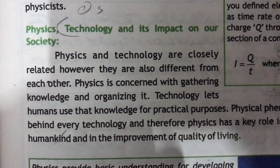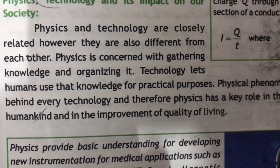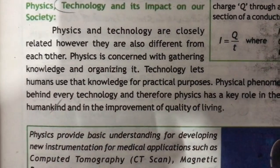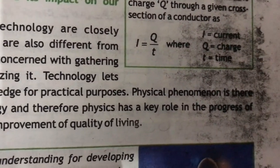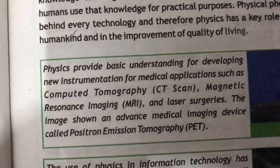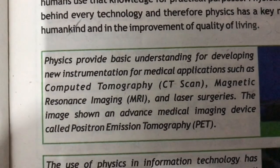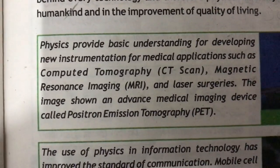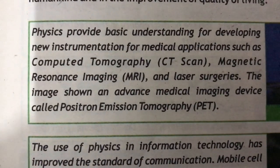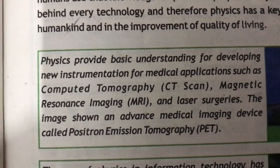Physics, technology, and its impact on society — physics and technology are closely related, however they are also different from each other. Physics is concerned with gathering knowledge and organizing it; technology lets humans use that knowledge for practical purposes. Physical phenomena are behind every technology, and therefore physics has a key role in the progress of humankind and the improvement of quality of living. Physics provides basic understanding for developing new instrumentation for medical applications such as computed tomography (CT scan), magnetic resonance imaging (MRI), and laser surgeries. The image shown is an advanced medical imaging device called Positron Emission Tomography (PET).